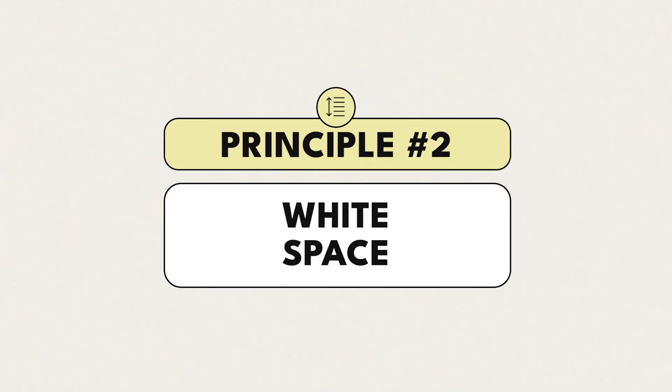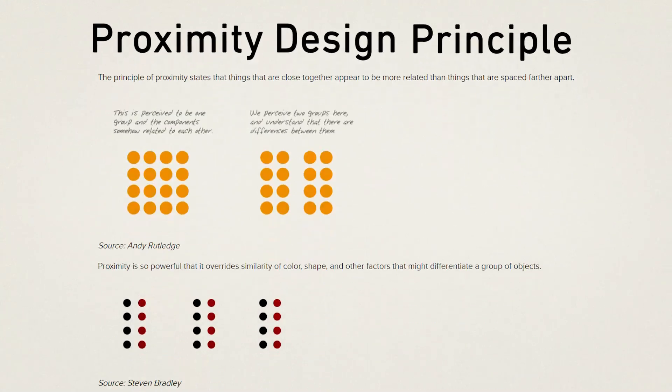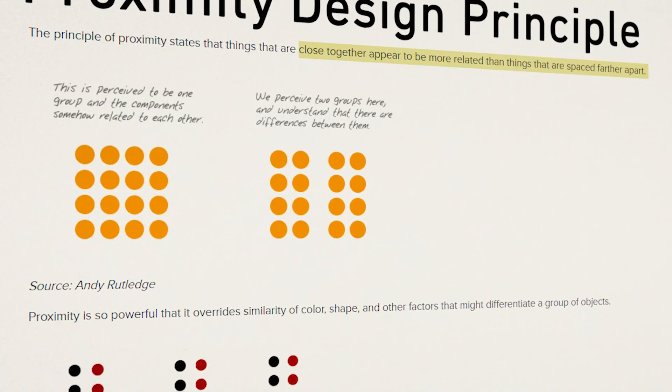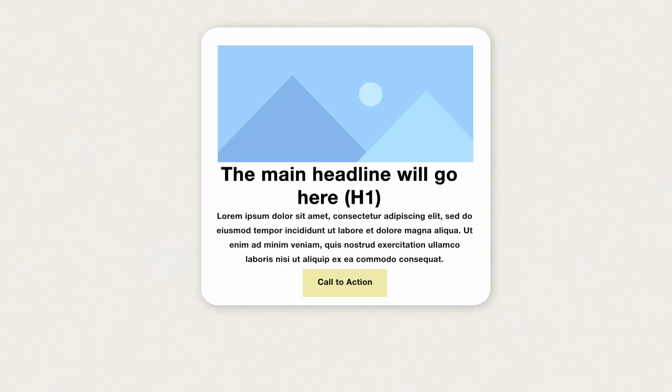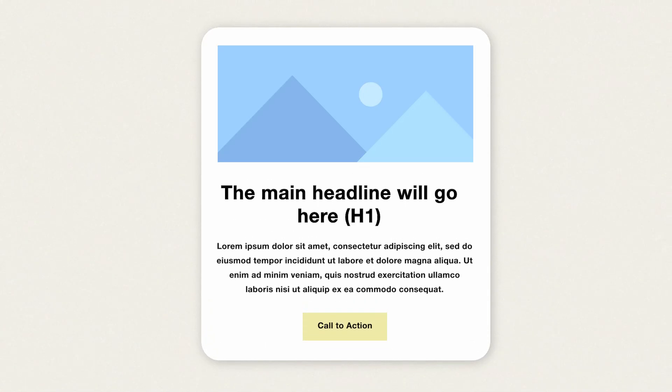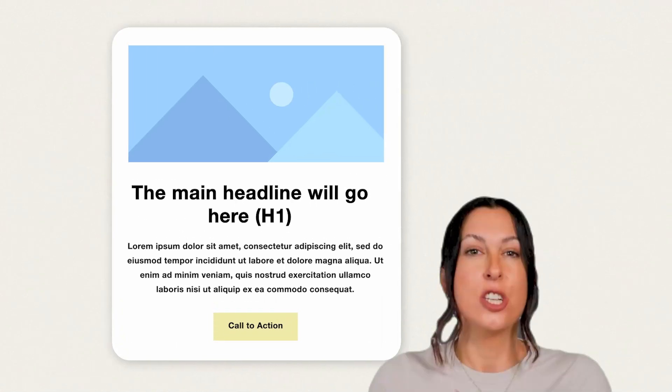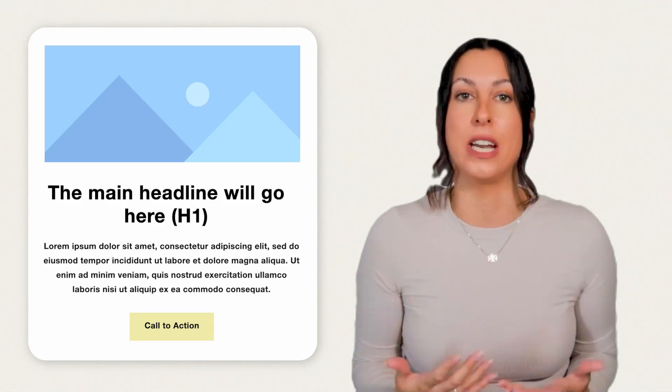The second principle is white space. And honestly, this is the one thing that's going to make your email go from good to fantastic. White space refers to any blank space surrounding your elements. According to the proximity design principle, objects placed closer together tend to be seen as one single unit rather than individual or unrelated parts. By including more white space between different sections of your email design, you help the reader flow through the email better. We also use white space within one section to space out our images, copy, and CTA so it's not cramped together and improves readability.